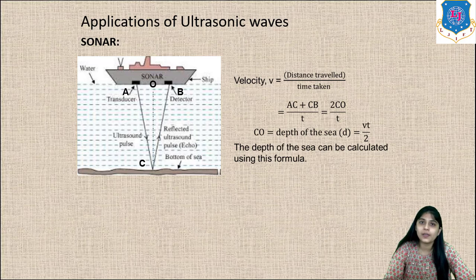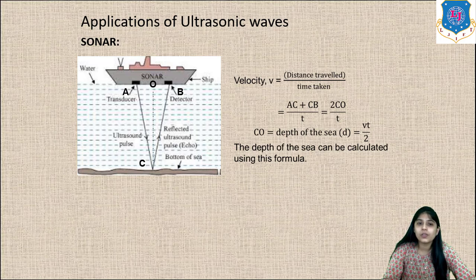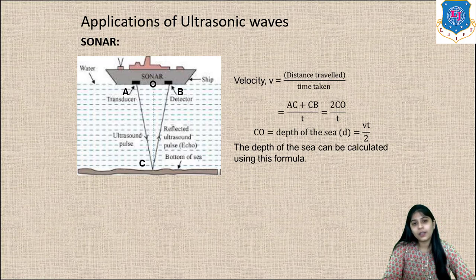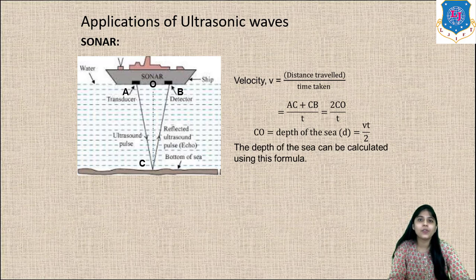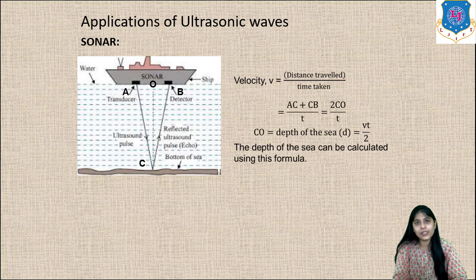When ultrasonic waves are passed through transducer A acting as a transmitter, they travel as a highly directional beam over long distances until they reach the desired object. For example, to find the depth of the sea, the transmitted ultrasonic waves travel to the seabed and get reflected back, then received by transducer B.